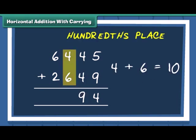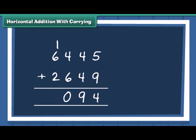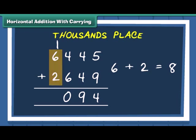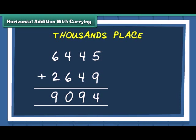Then add the numbers at hundred's place. We have 1 number carried on to thousand's place. Add thousand's to make the final answer. So, the answer to the problem is 9094.